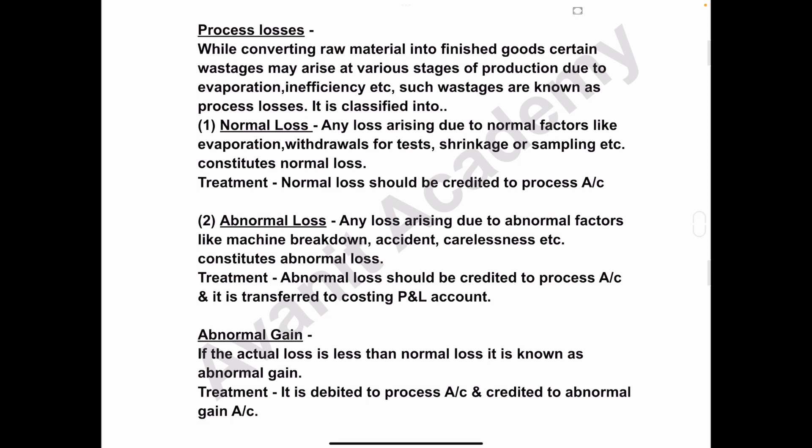Next we'll learn the meaning of process loss. While converting raw material into finished goods, certain wastages may arise. There will be certain wastages of raw material while converting it into finished goods. Such wastages may be due to evaporation, inefficiency, or carelessness of the worker. Such losses or wastages are considered as process losses, and process loss is classified into two types: number one, normal loss; number two, abnormal loss.